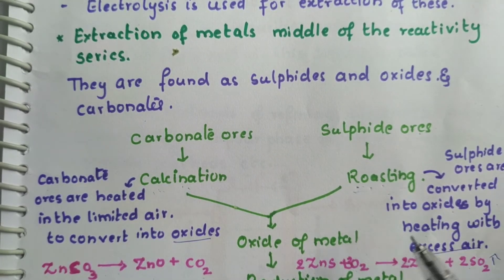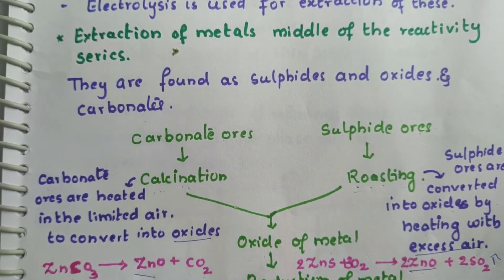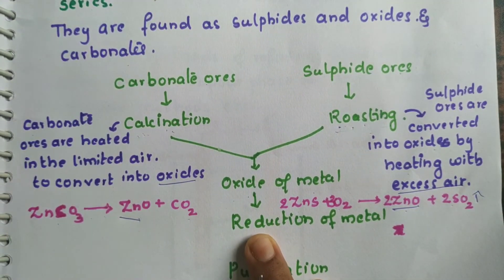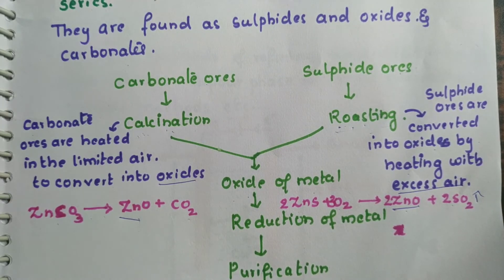After roasting and calcination, we get zinc oxide from both processes. After obtaining the oxides, we use reduction using either coke or carbon monoxide as a reducing agent to obtain the pure metal. After obtaining the metal, we undergo a special process called refining, which is used for purification of the metal.